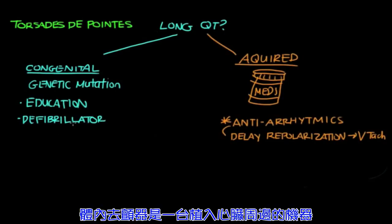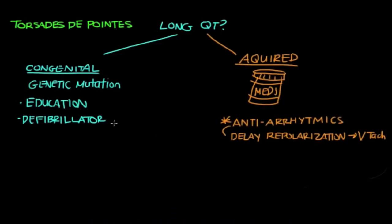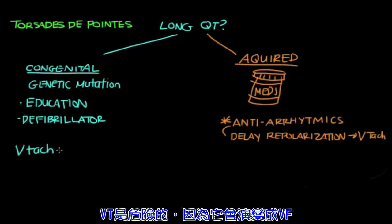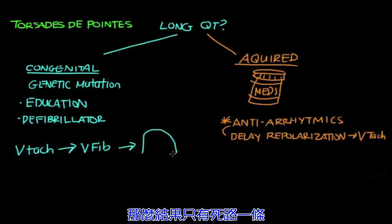Now, an internal defibrillator is a machine that's implanted into the heart and it will shock the heart back to a normal rhythm if it develops or disintegrates into a deadly rhythm. Remember, we said that Torsades is a type of V-tach. And, V-tach is dangerous because it can turn into ventricular fibrillation or V-fib. And, if that's not reversed immediately, then the result is rapid death.